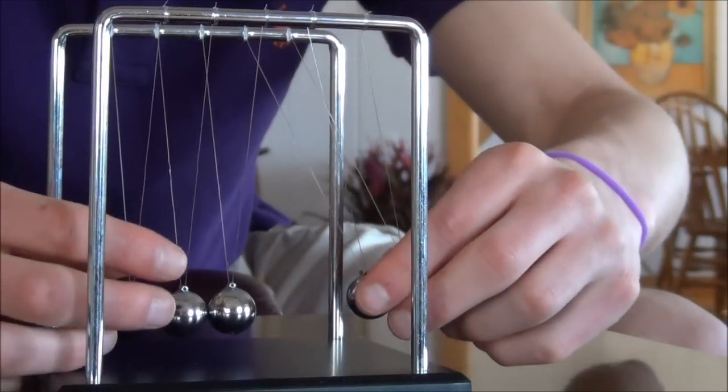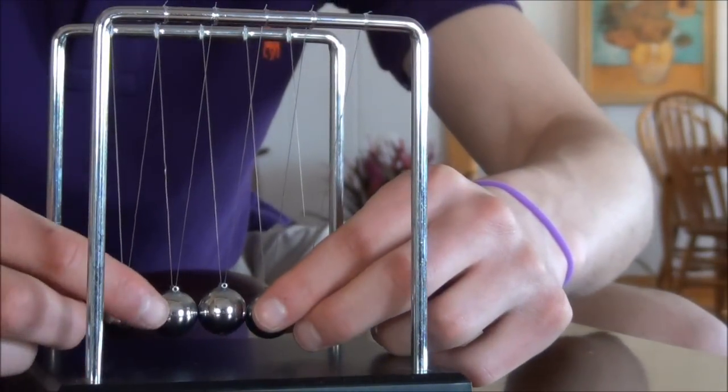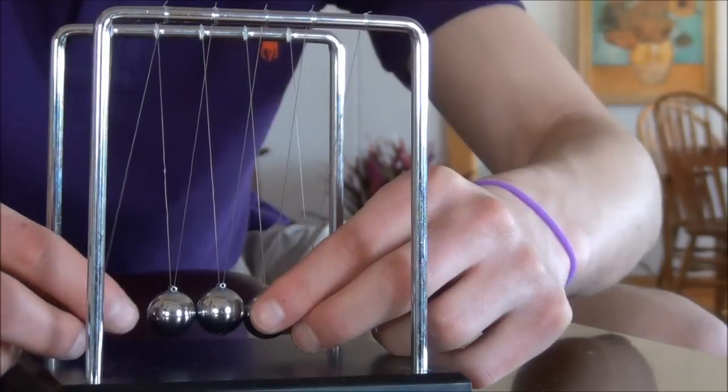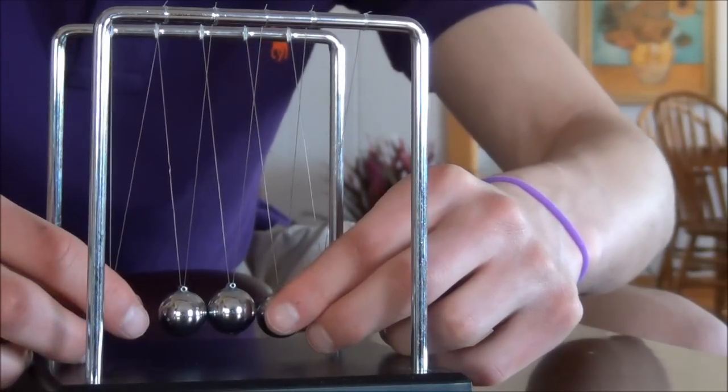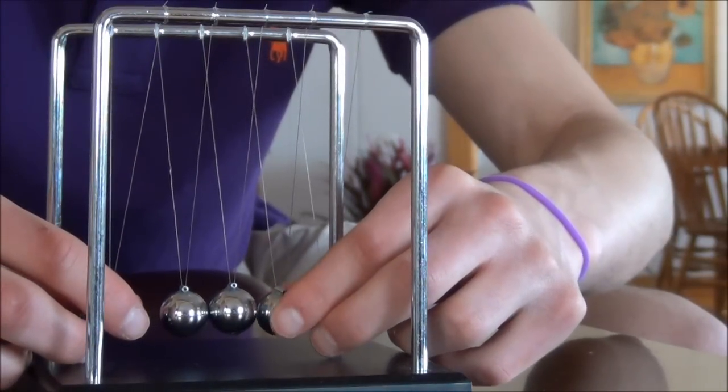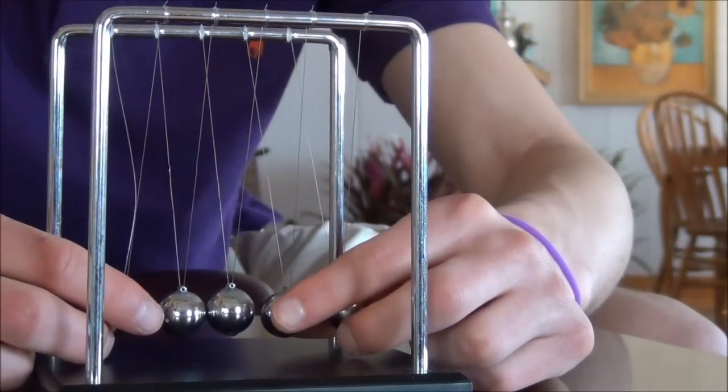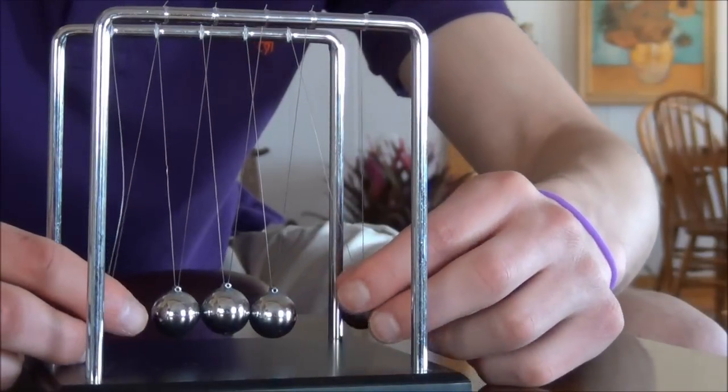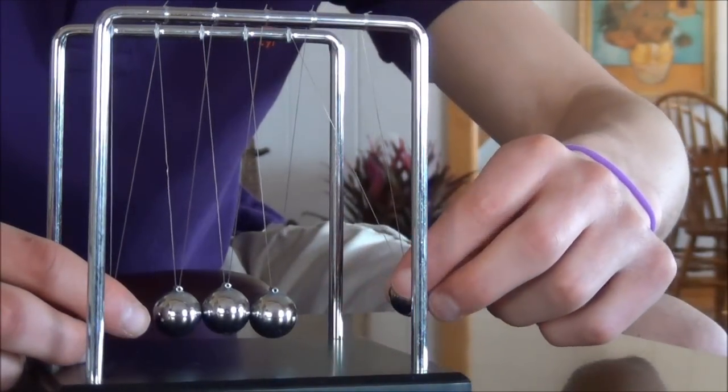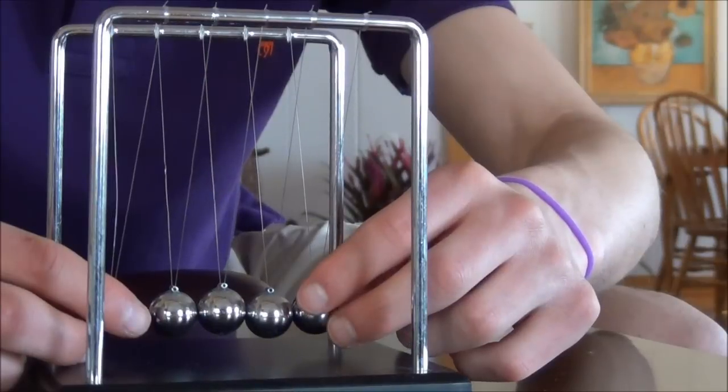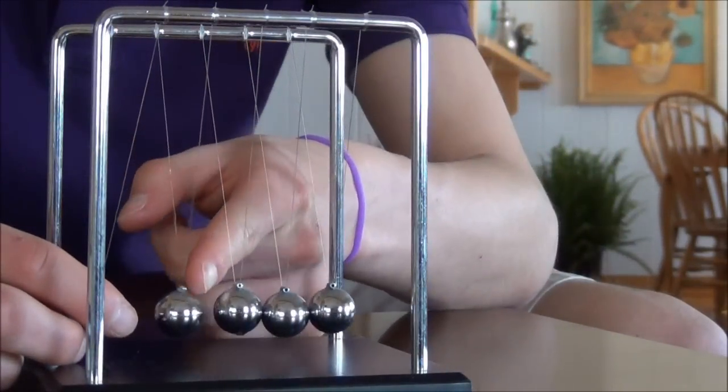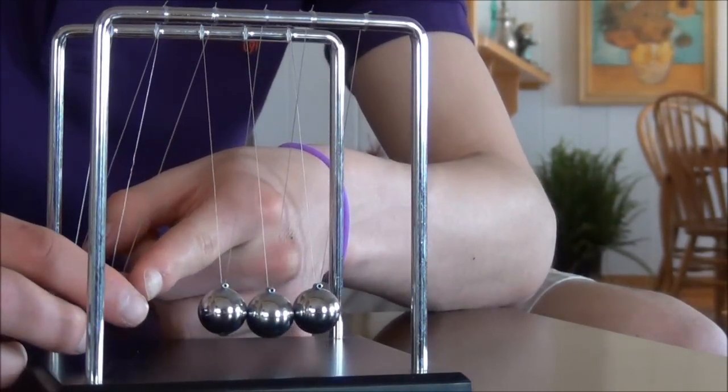So when ball number two comes in and collides, we get this first ball moving out and it's going to move up with the same velocity that this ball had coming in here because we know that kinetic energy in this case is maintained, momentum is conserved. And then as this ball moves out, we have this second ball come in and collide. And then that causes this next ball to move out.